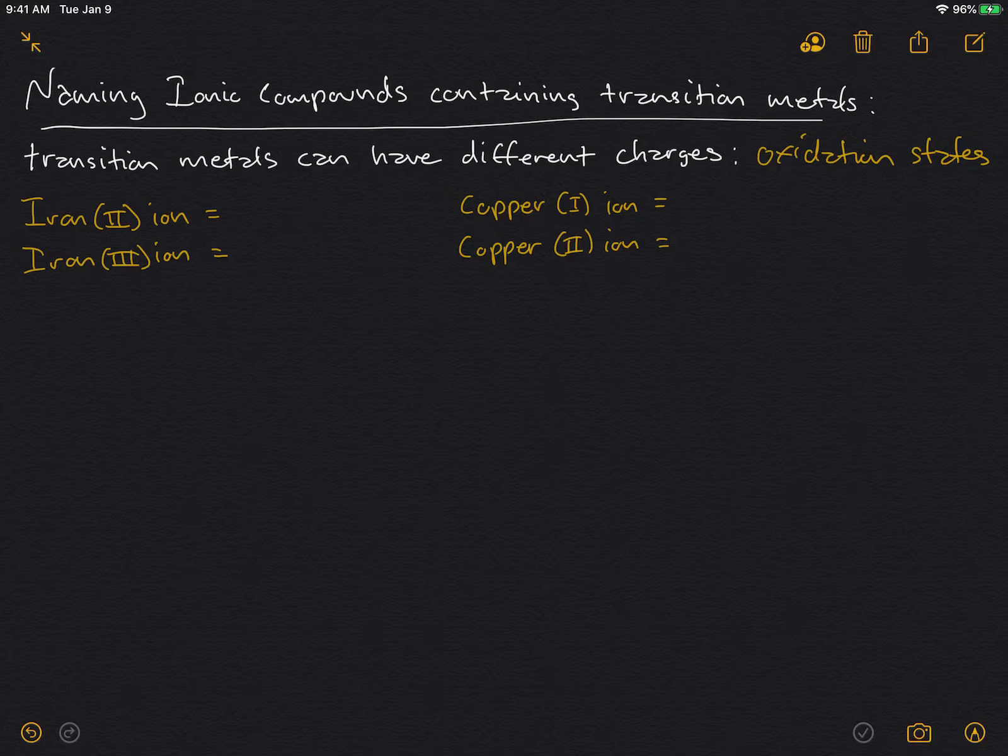This means that they can lose different numbers of electrons depending on what they're interacting with. So for example, the iron(II) ion means that iron has lost two electrons, and so this is the iron 2+ ion.